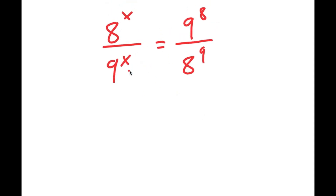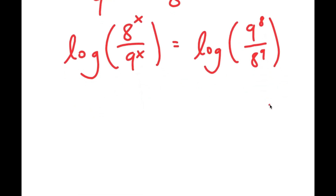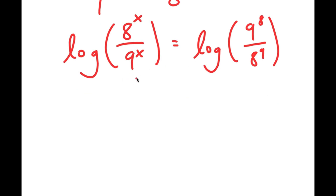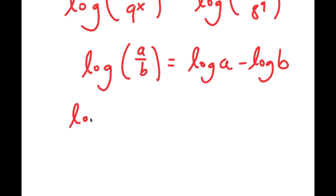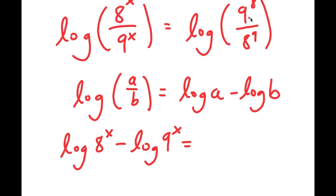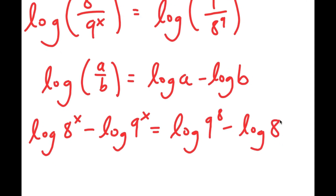From here, I'm going to take the log on both sides. So I get log of 8 to the power of x over 9 to the power of x is equal to log of 9 to the power of 8 over 8 to the power of 9. If I have something in the form log a over b, this is equal to log a minus log b. So log of 8 to the power of x over 9 to the power of x equals log of 8 to the power of x minus log of 9 to the power of x, and similarly for the right-hand side.